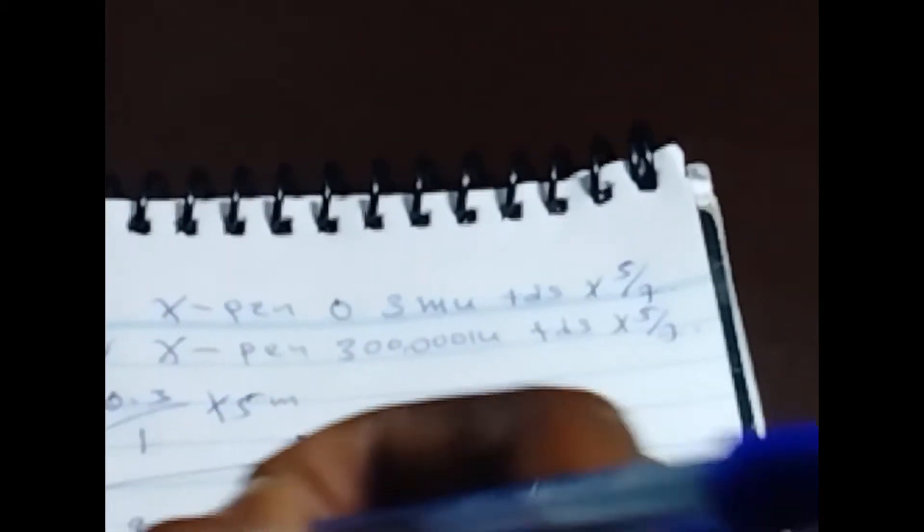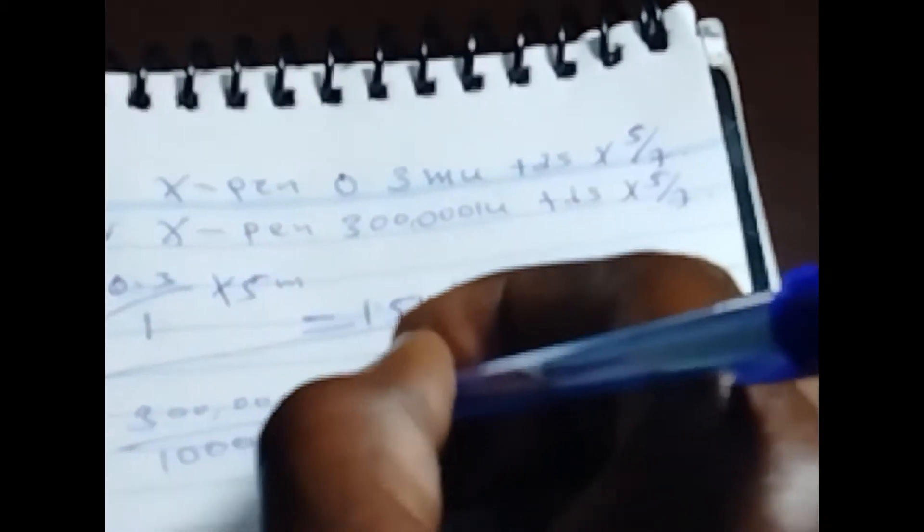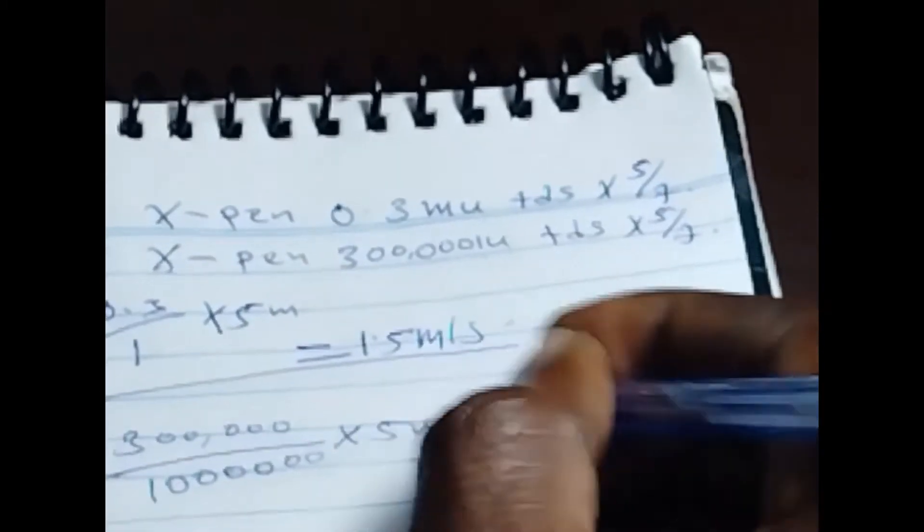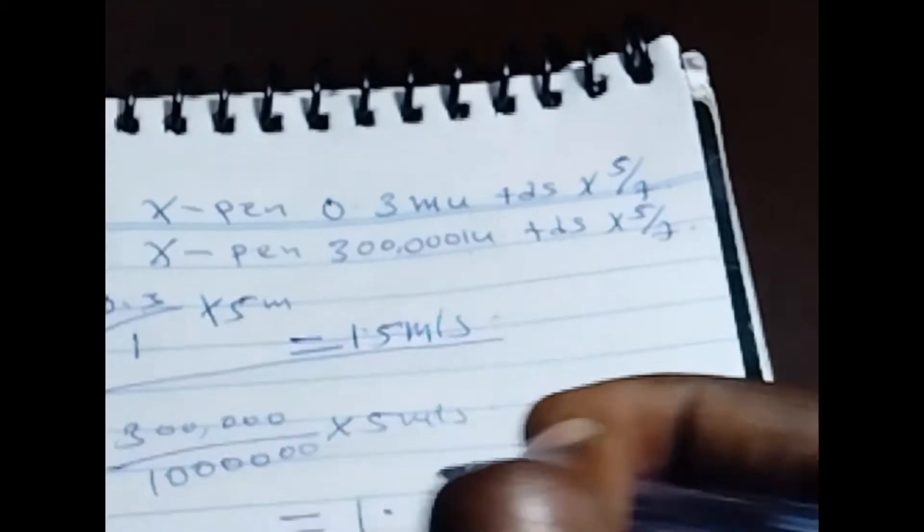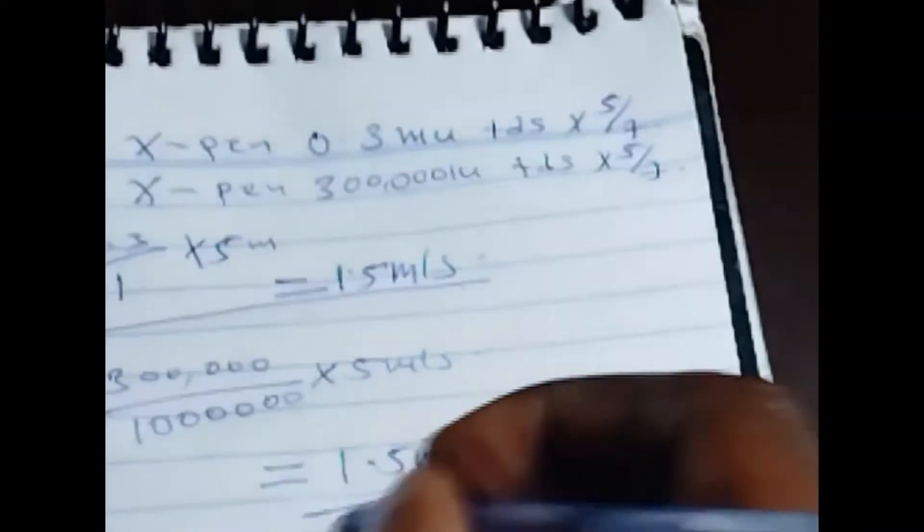So it is 300,000 divided by one million times five mL. This is what we are going to give to the patient.